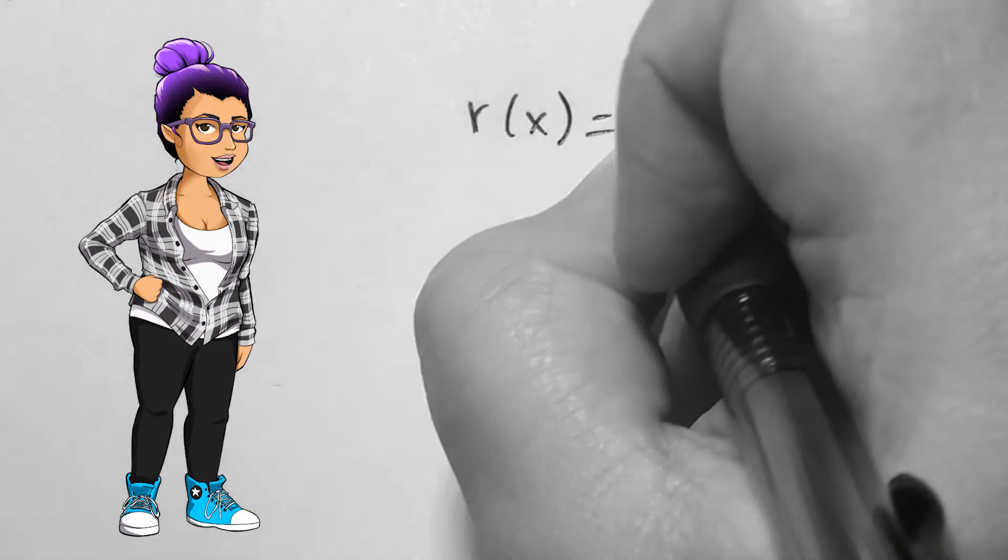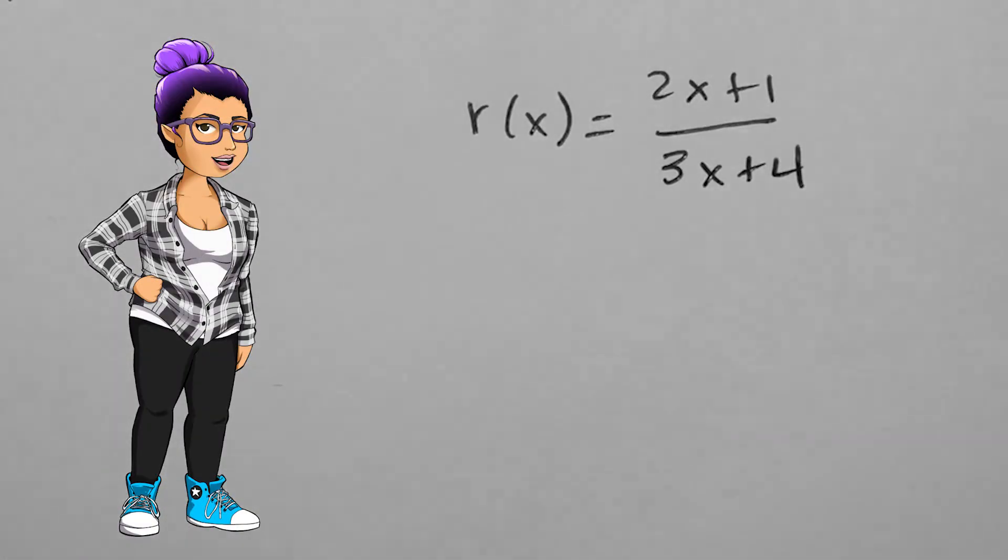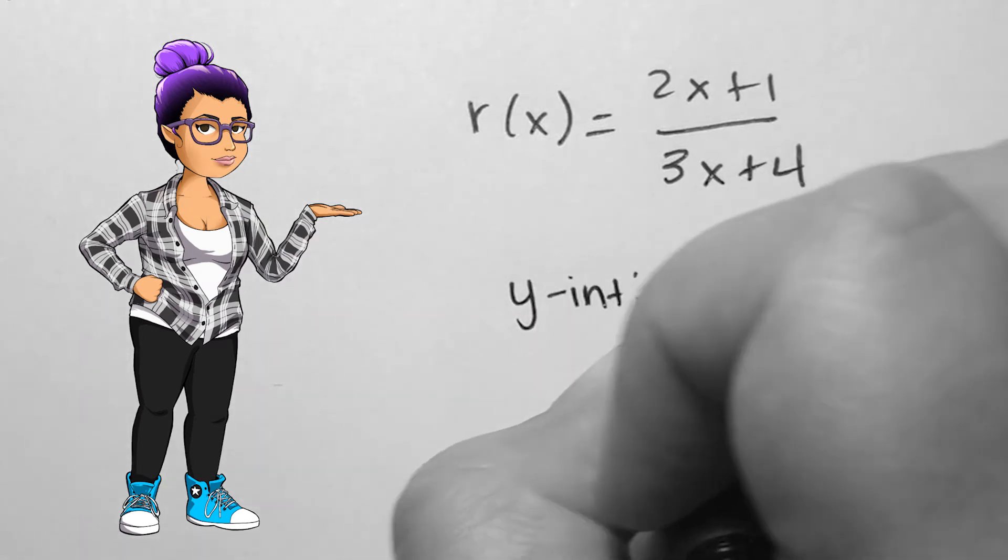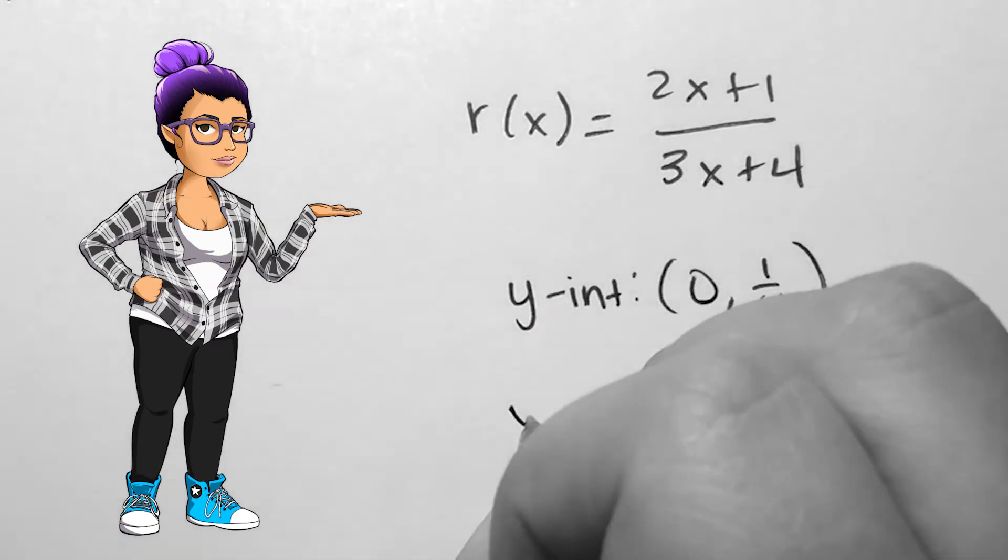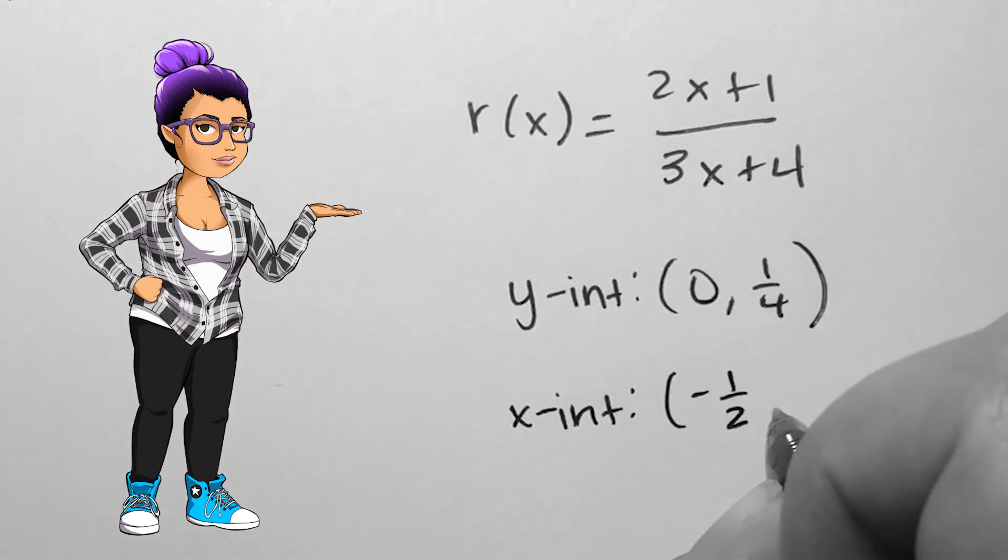If r(x) is (2x+1)/(3x+4), the y-intercept is (0, 1/4), the x-intercept is (-1/2, 0).